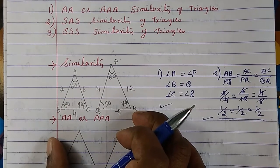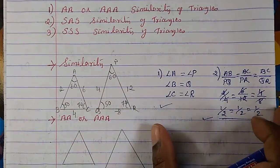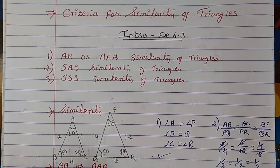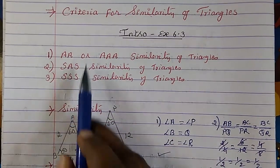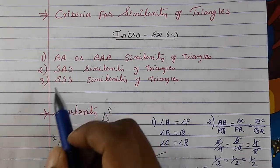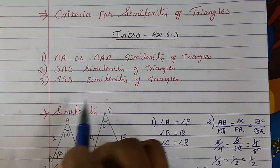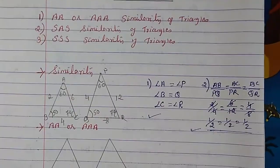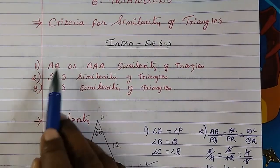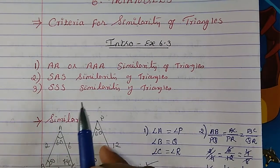Instead of checking all the angles and all the ratios, there is a shortcut way to determine similarity. For that, we have studied Theorem 6.3, 6.4, and 6.5 — three theorems. This is the shortcut method. When these conditions are fulfilled, we can also say that the two triangles are similar.